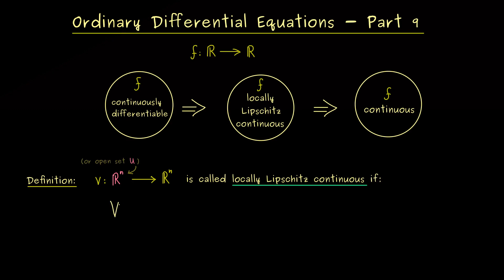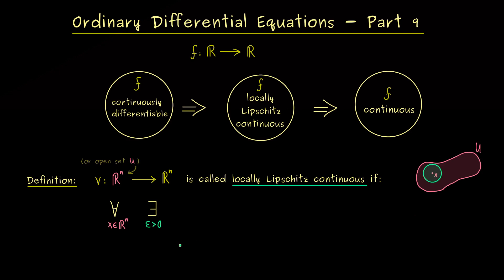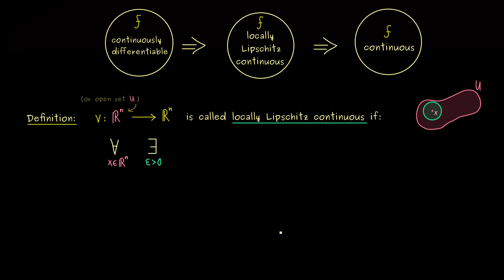We write the quantifier: for all x in the domain, something has to be fulfilled. As always in such formulations we have the for-all quantifier and the there-exists quantifier. A local condition means that we find a local neighborhood of this point x. Since we live in R^n we can always choose an epsilon ball. For each point x we find an epsilon greater than 0 such that the whole epsilon ball around x still lies in the domain.